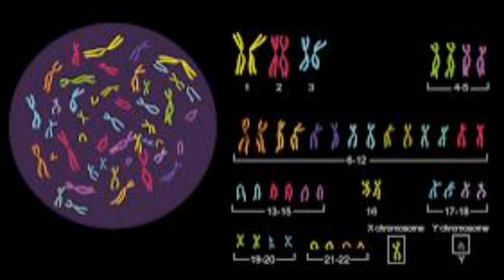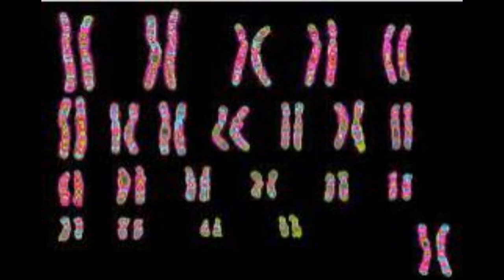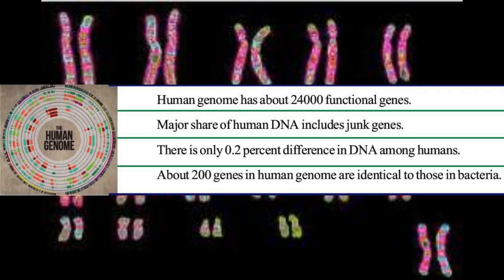Most of the nucleotides in the DNA on the 46 chromosomes in each of our cells are non-functional — they are called junk genes. Around 24,000 functional genes are seen in our genome. The complete genetic material present in each cell of an organism is called its genome.